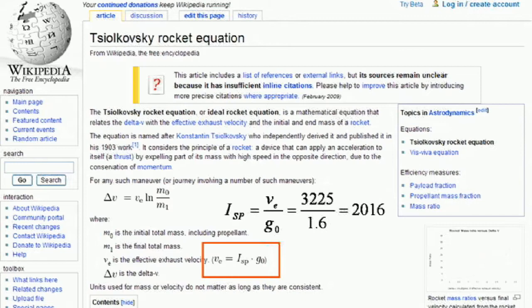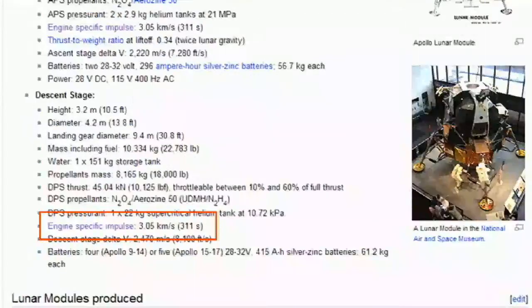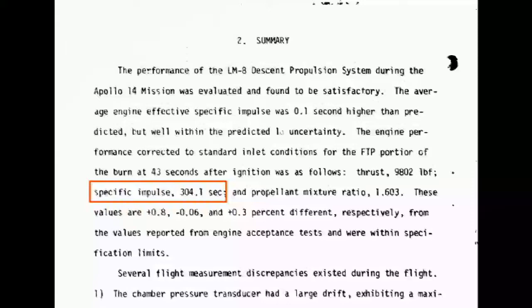The specific impulse for the limb descent engine is usually quoted to be in the range of 300 to 315, depending on whether the 10-inch extension is included in the nozzle or not. This value is widely available on the Internet. Wikipedia, for example. Another good source, and a little more original, is the DPS performance reports that were filed after each mission.